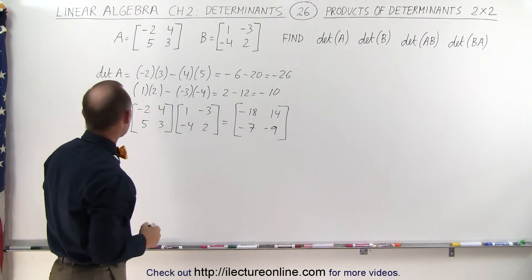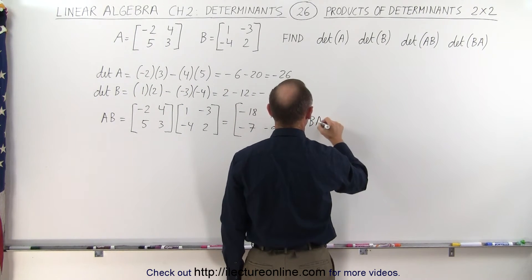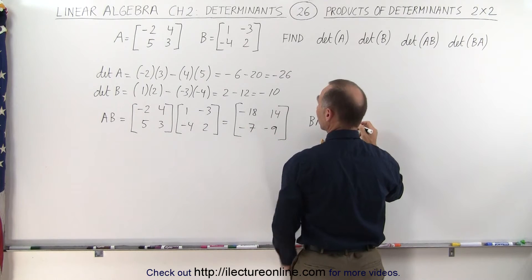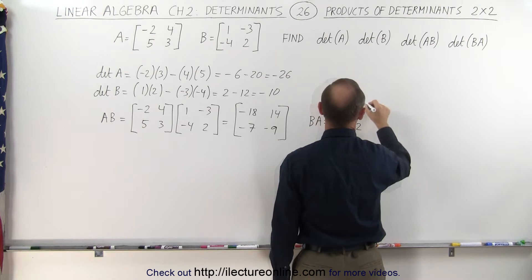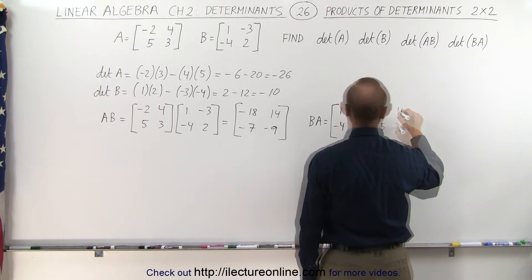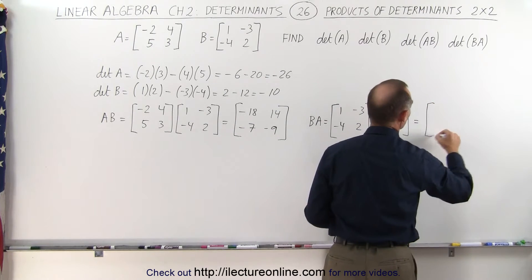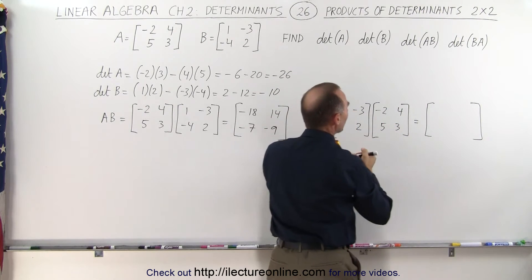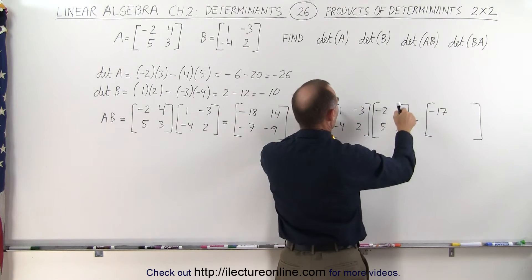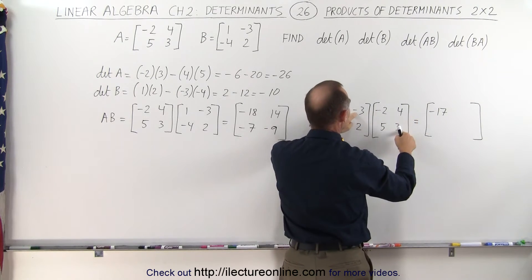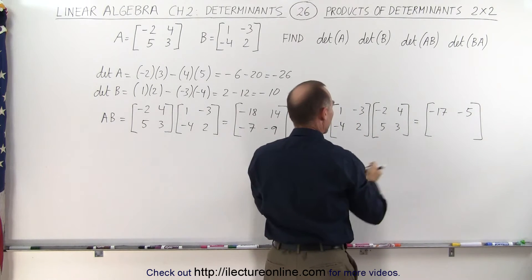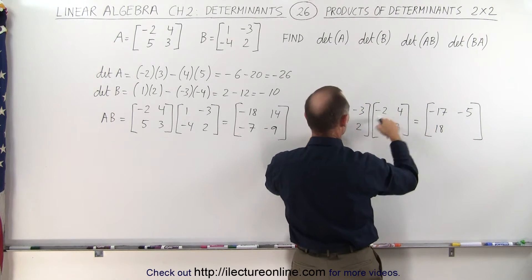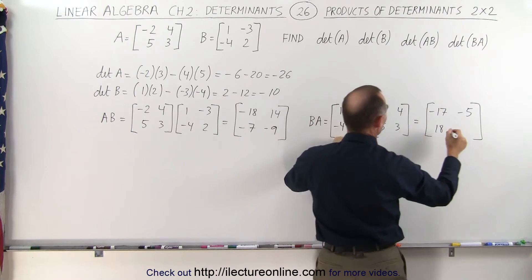We might as well also compute the product B times A. You'll find that's not going to be the same matrix when we flip the order. Writing B first — 1, minus 4, minus 3, and 2 — multiplied times matrix A, which is minus 2 and 3. The first element is minus 2 minus 15, that's minus 17. The second element is 4 minus 9, that's minus 5. The third element is 8 plus 10, that's 18. And finally, minus 16 plus 6, that's minus 10. Notice we did not get the same product when we flipped the order of the matrices.